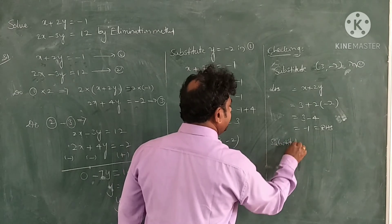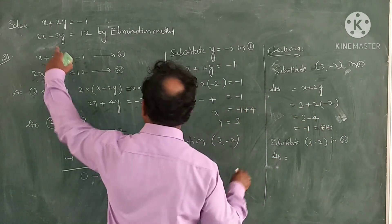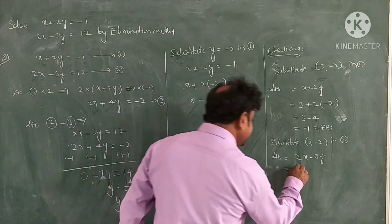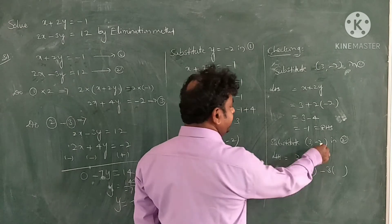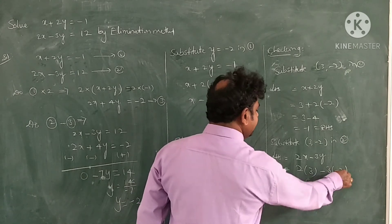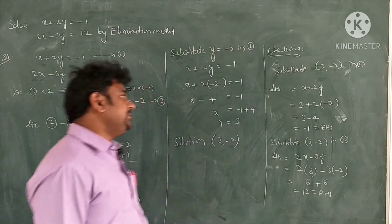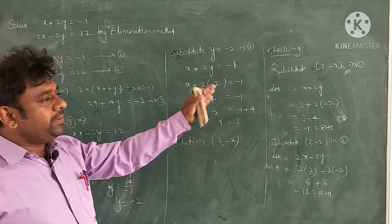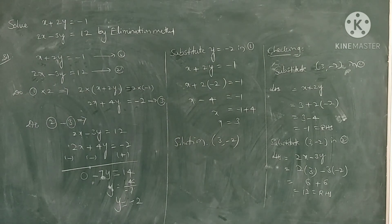Once again, check in equation 2. Substitute (3, minus 2) in equation 2. LHS: 2x minus 3y equals 2 into 3 minus 3 into minus 2 equals 6 plus 6 equals 12. This also equals RHS, which is 12. So in both conditions, substituting (3, minus 2) satisfies both equations. Therefore, (3, minus 2) is the solution for the given pair of linear equations. Now, let us move to another example. Thank you.